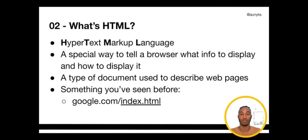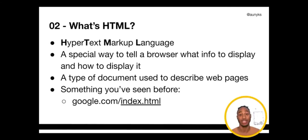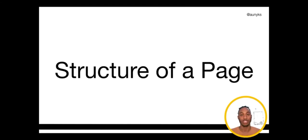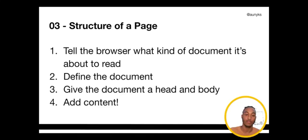HTML is just a way to format our text document. Whether you've noticed it or not, you see HTML pages all the time — any time you're on the web. For example, when you go to google.com you're seeing an HTML file. You can go to google.com or google.com/index.html and most likely see the exact same page, because by default Google is showing you index.html.